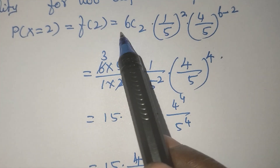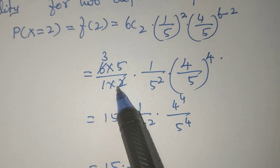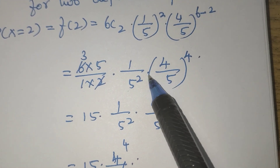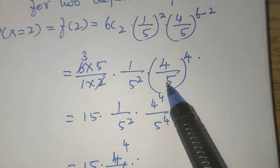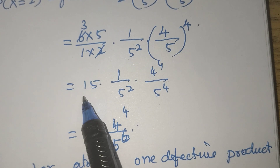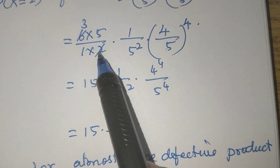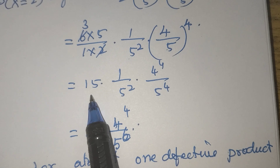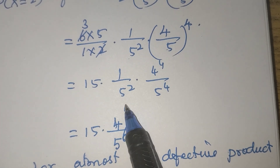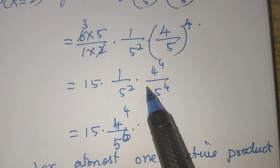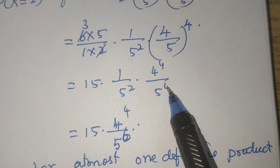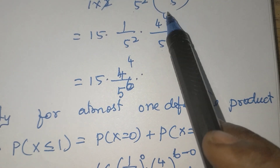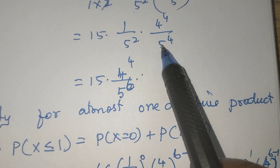This is equal to 6C2, which is 6 into 5 by 1 into 2, times (1/5)^2 times (4/5)^4. 6 cancels to give 3, and 3 times 5 gives 15. So we have 15 times (1/5)^2 times 4^4 by 5^4.